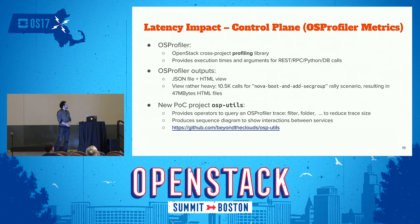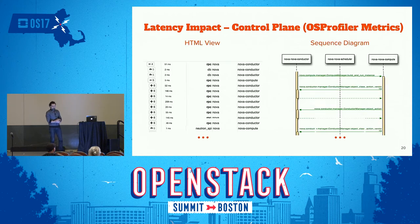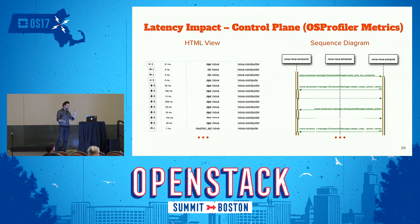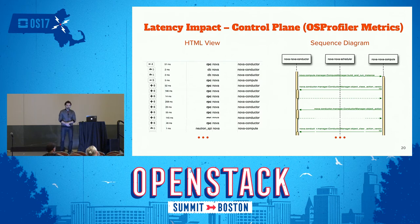For a scenario like Nova Boot and Add Security Group from Rally, OS Profiler produces 10.5k calls, making it hard to find the bottleneck. So we developed a prototype called OSP Utils — a set of operators to query OS Profiler traces, apply filters, reduce trace size, and easily find bottlenecks. We also use it to produce sequence diagrams of execution, showing all interactions between different OpenStack services and the complete workflow. Blue links are for Python calls and green ones are for RPC calls.